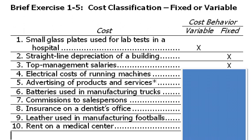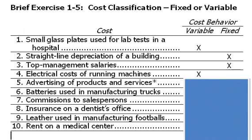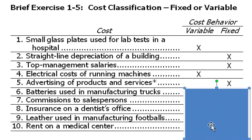Electrical costs of running machines: if we have more activity and use more electricity, then we expect our electrical costs to go up, so that would be a variable cost. Advertising of products and services has an exclamation point — it probably is a discretionary cost that may relate to volume of activity, but may relate to a manager's preference for advertising. Usually advertising is considered separate and distinct from volume of activities. In fact, we may have very little activity but incur a large amount of advertising, and it doesn't relate to the number of sales units. Given that there's no relationship to the volume of activity, that would be a fixed cost.